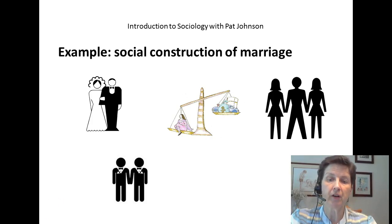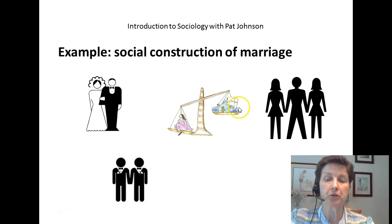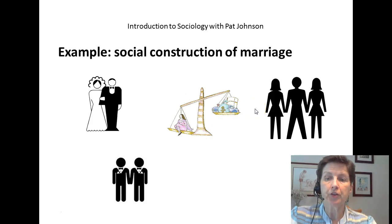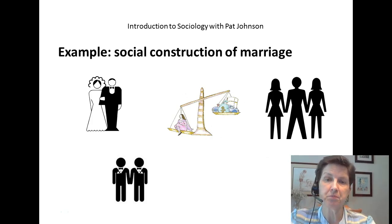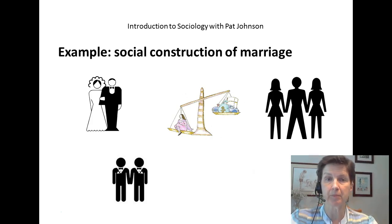Some people think of marriage as only one man and one woman. In some cultures, marriage includes a dowry where a woman is exchanged for goods given to the bride's family. In other societies, as we'll see later in the course, marriage can be between more than two people. And as we've seen change in recent years in our culture, American society has expanded the idea of marriage to include same-sex marriage. So the social construction of marriage is changing — it changes based on time and based on the society a person lives in.